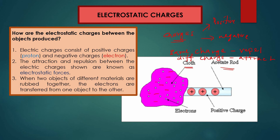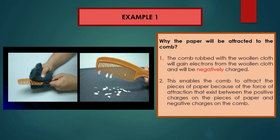When a cloth is rubbed with a comb, the comb becomes negatively charged since it receives electrons from the cloth. The paper pieces are positively charged, so they are attracted to the comb. The comb rubbed with the woolen cloth gains electrons and becomes negatively charged, enabling it to attract pieces of paper because of the force of attraction between positive and negative charges.